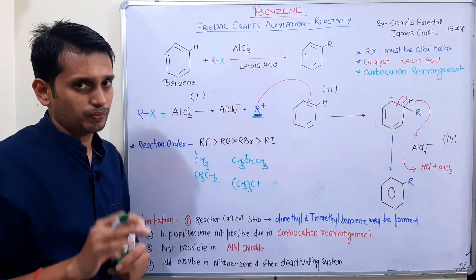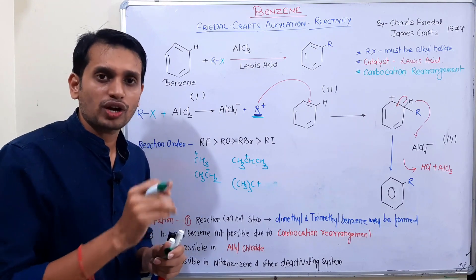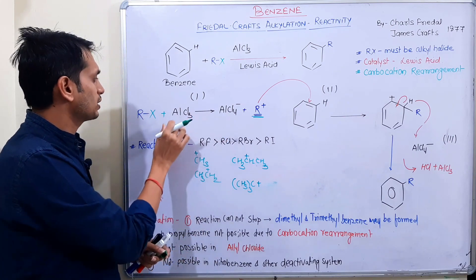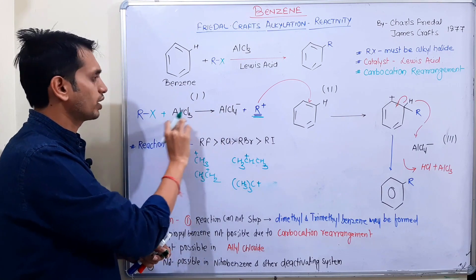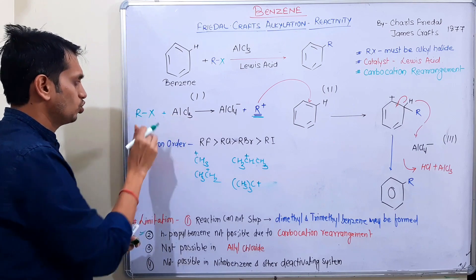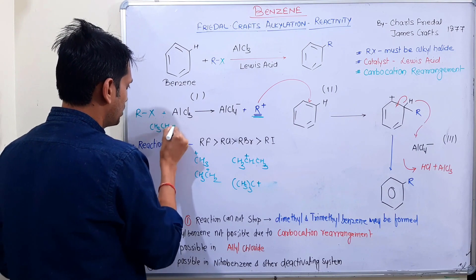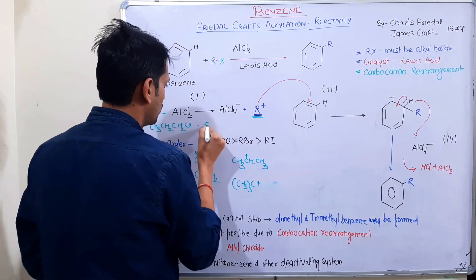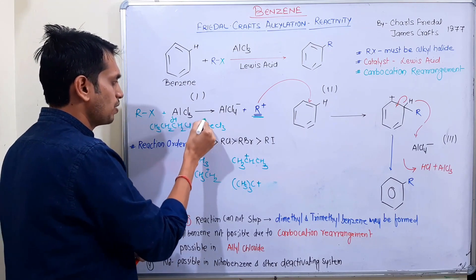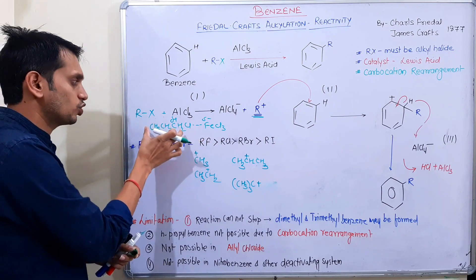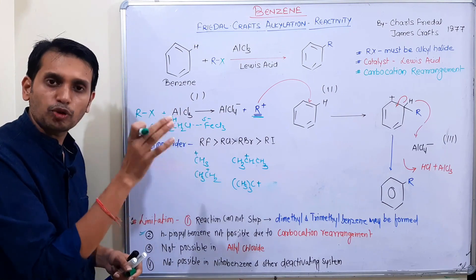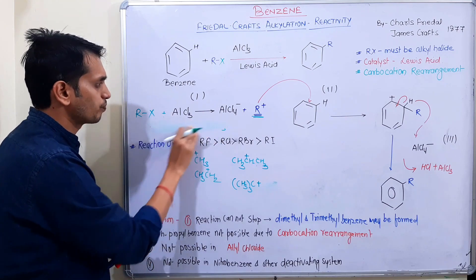لیکن اگر ہم ZnCl₂ یا FeCl₃ use کریں تو — جب CH₃CH₂CH₂Cl اور AlCl₃ react کریں — partially negative charge بنتا ہے — completely ionic نہیں بنتا۔ اس طرح ZnCl₂ یا FeCl₃ کے ساتھ N-propyl benzene یا N-butyl benzene بنانا ممکن ہو جاتا ہے — یہ اس topic کا ایک specific اور اہم point ہے۔